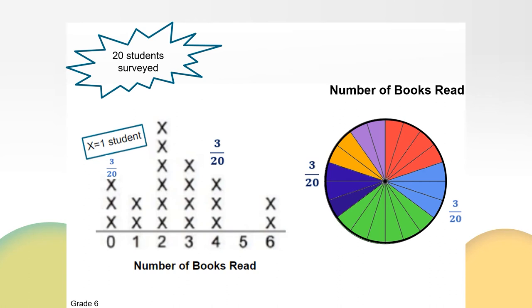I can also see that 2 out of the 20 students read 6 books. My circle graph has 2 orange pieces shaded in to show that 2/20ths of the students read 6 books. As we're going along, we're really showing the color to represent each category. I see a lot of students read 2 books, so this should be the largest section of my circle graph. 6/20ths of the students read 2 books on the line plot, and on the circle graph I can see 6 out of 20 pieces shaded in green. 4/20ths of the students read 3 books, and I can shade 4/20ths of my circle graph in red to represent the students that read 3 books.